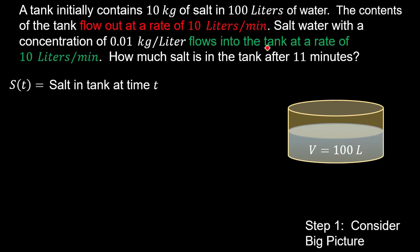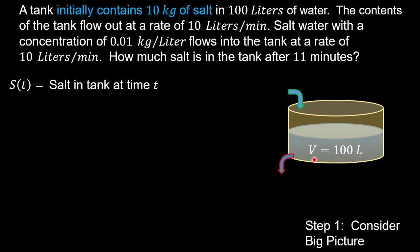As the problem states, there's salt water flowing into the tank at a rate of 10 liters per minute, and the contents flow out at 10 liters per minute. We can denote the flow in and the flow out accordingly. Our initial condition, shown in blue, is that the tank initially contains 10 kilograms of salt — so S of 0 equals 10 kilograms.